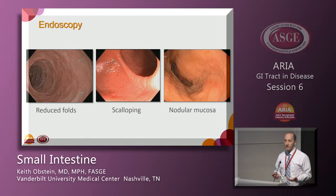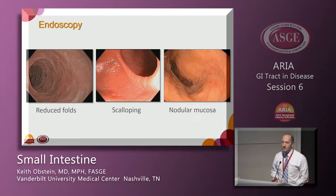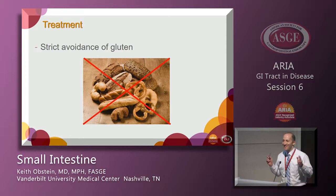On endoscopy for celiac disease, we take at least four biopsies in the second portion of the duodenum and at least two in the duodenal bulb, for a total of six. Endoscopic features include reduced or flat folds, scalloping of the ridges, and a nodular appearance. Treatment is strict gluten avoidance — there is no pill currently available.